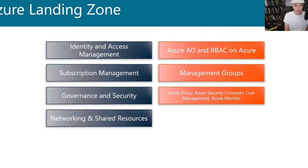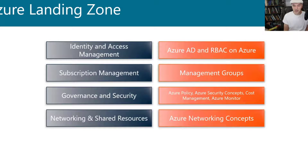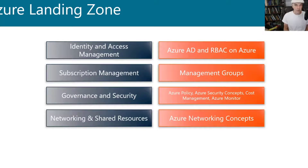Beyond governance and security, we have networking and shared resources. This relates to network security but also covers the shared resources in an Azure environment — such as on-premise connectivity. If you're maintaining a hybrid scenario with an on-premise data center and Azure cloud, you have to set up things like a VPN or ExpressRoute, and you'd need shared resources across that connection such as domain controllers, DNS servers, or network virtual appliances. You might also have data sharing to set up, like file shares between Azure and on-premise, and get all those shared resources configured across the environments you're going to be using.